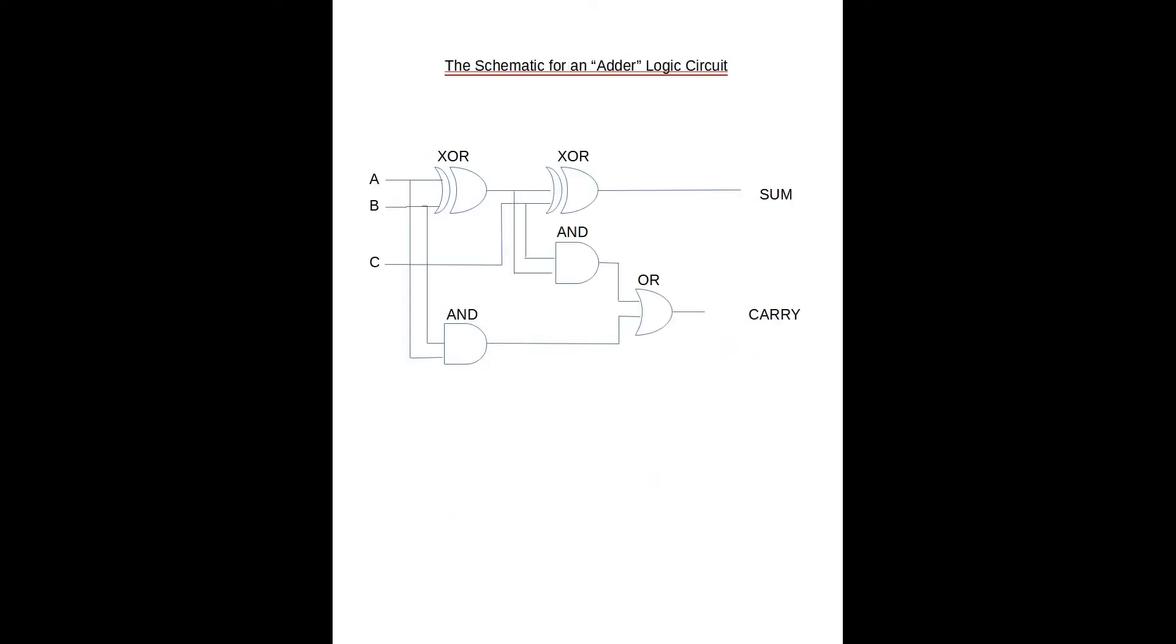To build what? Well, to build this adder logic circuit which essentially takes inputs A and B and outputs a sum of those two components plus a carry bit. And also notice that this is a stackable logic circuit in that the C on the left hand side shows that the carry could be input from a previous stage.